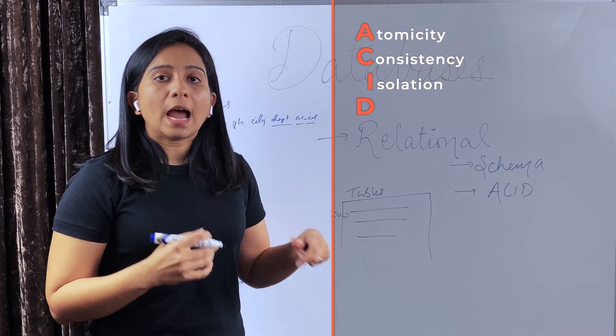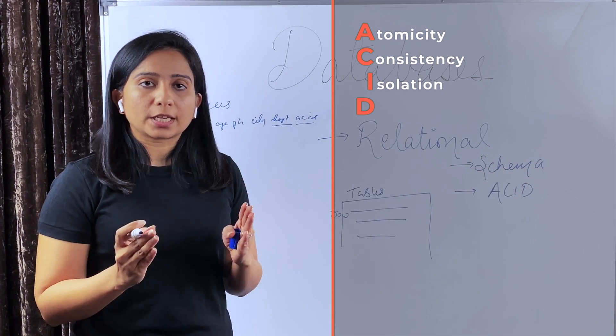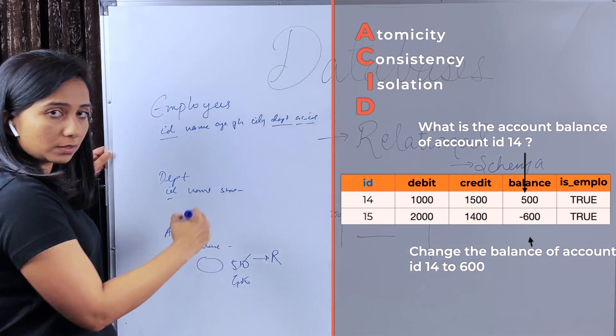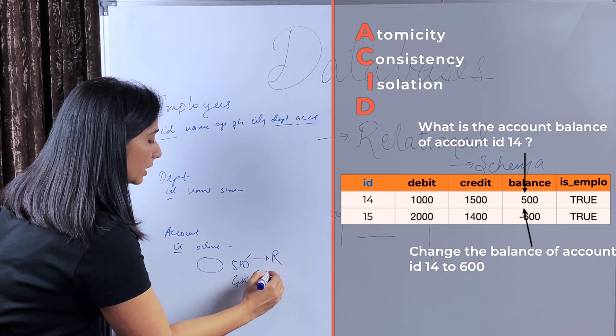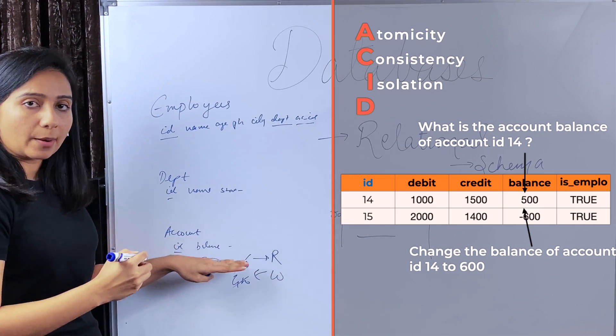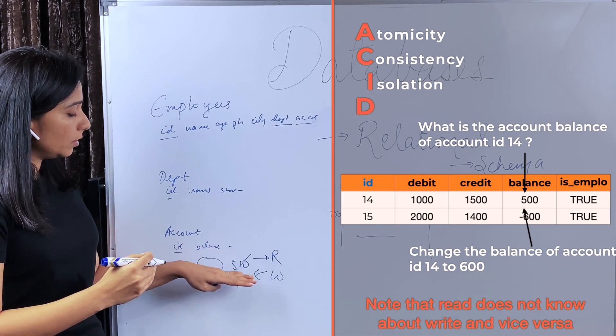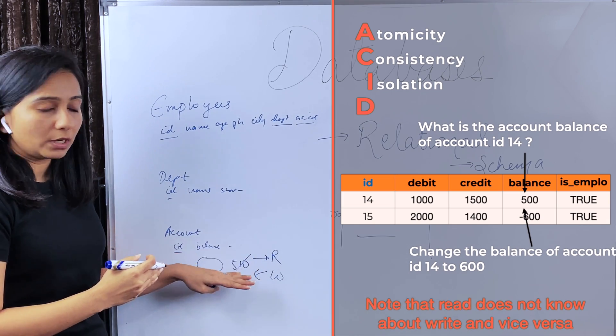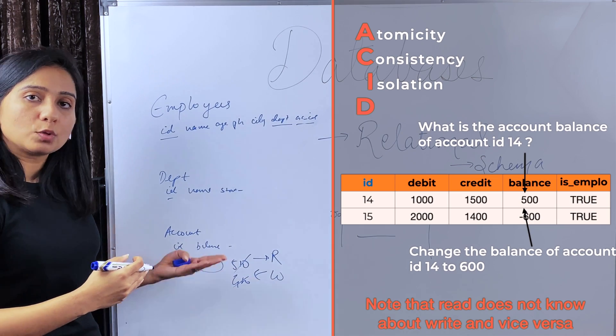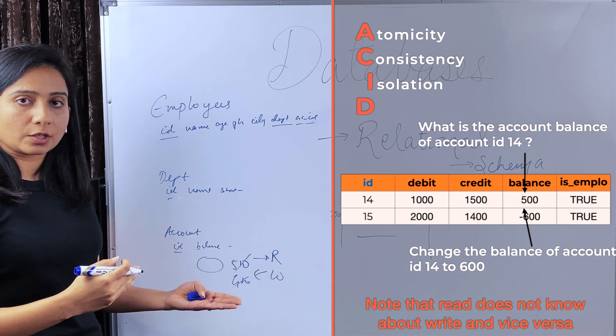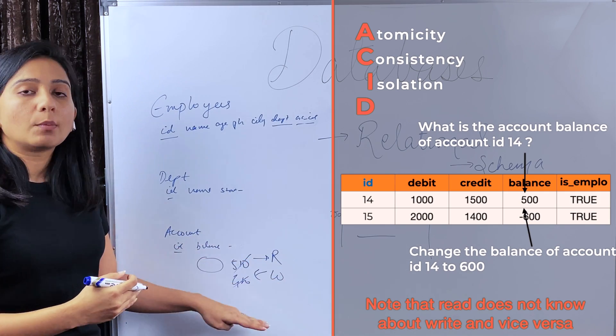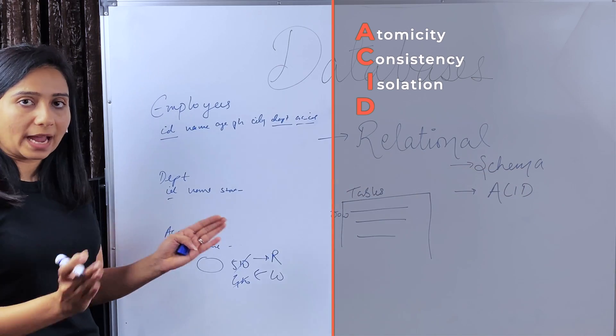Then isolation. Isolation means the two transactions do not know about each other. For example, there is a read happening on the balance and at the same time, there is a write is also happening. Suppose when read is happening, read will read the older value like 500 until the write is completed and write will go and update that value to 600. If the read happens after write, it will get 600. If the read happens before write, it will get 500. Read would not know about the write operation. So this is called isolation.